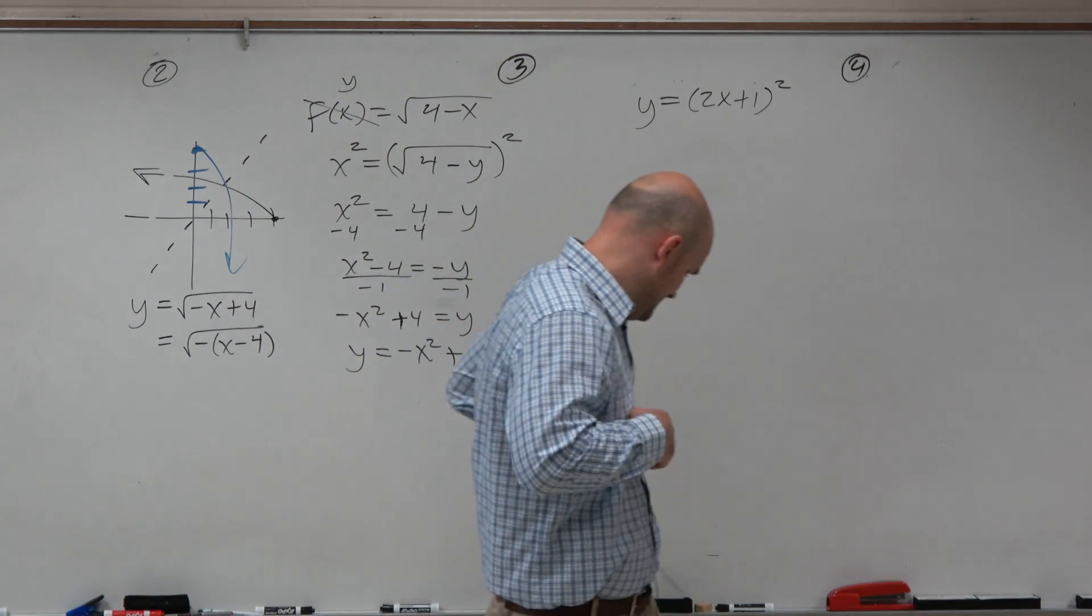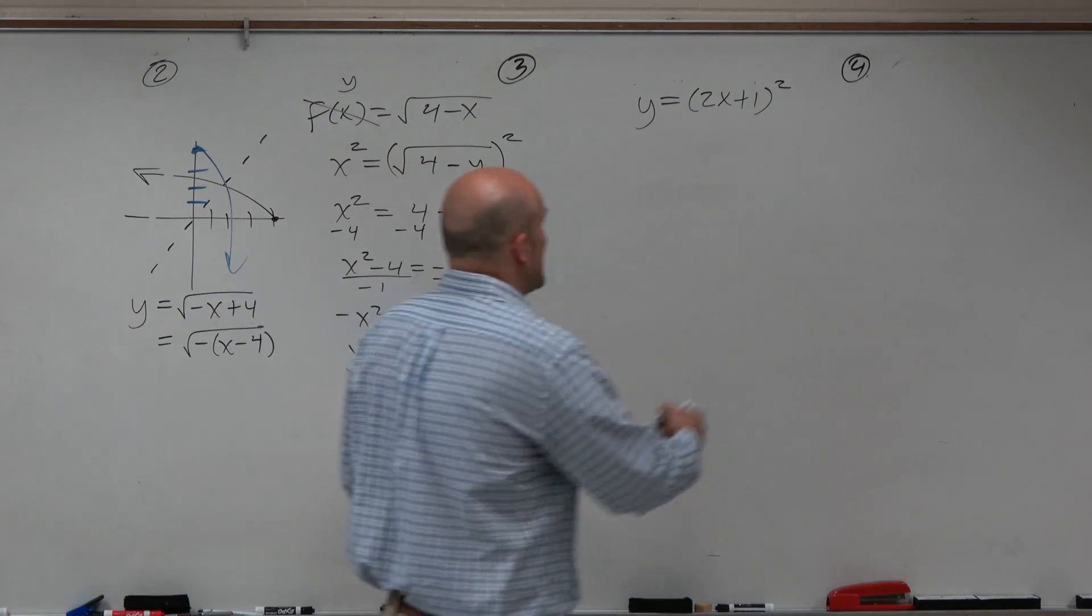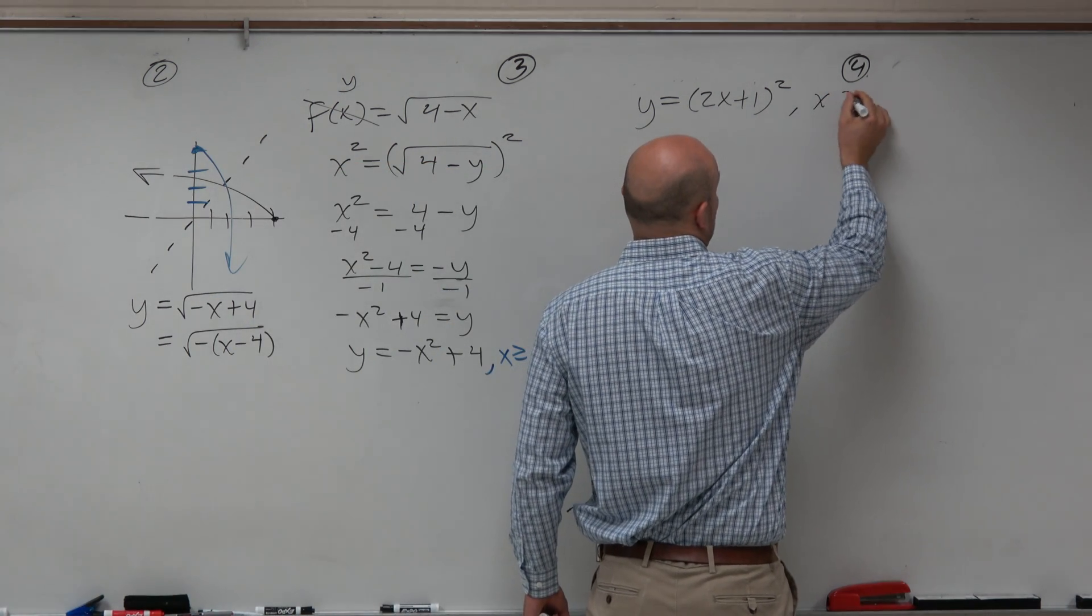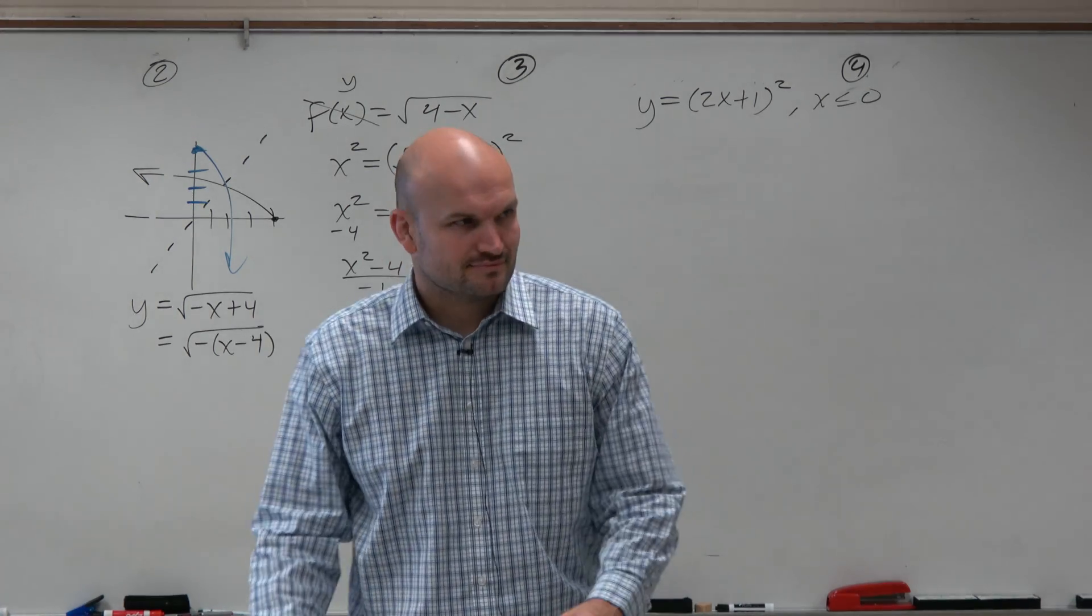Let's move on to the next one here, which is (2x + 1)². Now, automatically, we should look at this problem and say, hey, this is not 1 to 1. So if that's not 1 to 1, we can't find the inverse, right? Yeah? Done. Problem's over. But then you say, oh, I've made a mistake. There was actually a restriction on this.